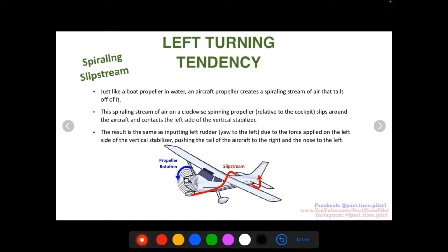So you have the propeller spinning here, creating a slipstream. This slipstream winds itself around the aircraft and actually manifests by pushing the aircraft, the aircraft's tail to the right, which pushes the nose to the left and leads again to a left turning tendency.